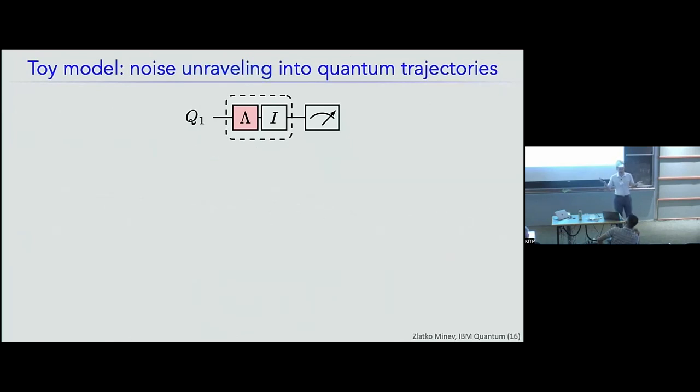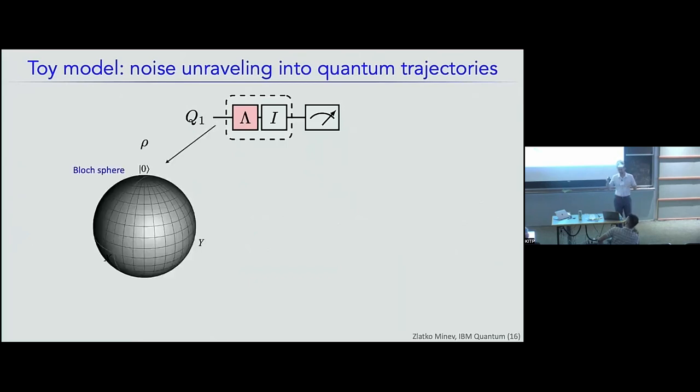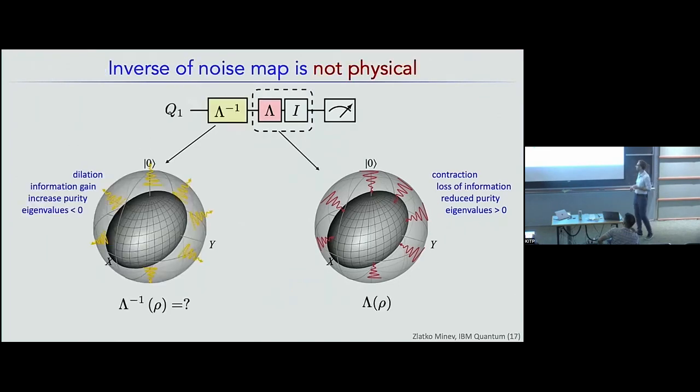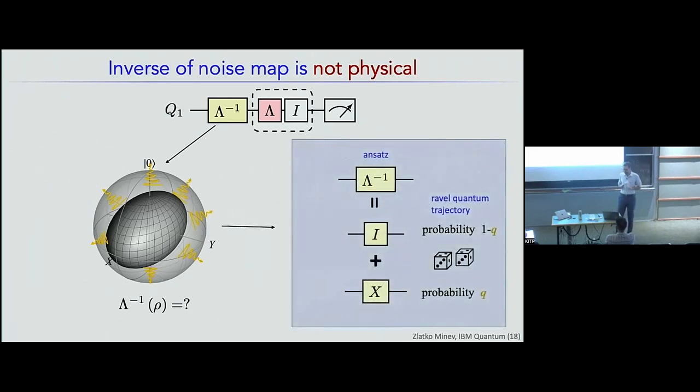The average evolution of these two quantum trajectories is then given by the average noise channel, lambda, which is a bit flip channel and looks like this. So visually, what does this actually do? And I mean, of course, the noise free states live on the qubit Bloch sphere and the very surface of it. And the noise itself, this channel lambda, then contracts all of the states towards the middle of it. And this contraction results in loss of information, it's reduced purity, and it corresponds to these positive eigenvalues. On the other hand, if we now want to implement the inverse noise map, we have to do the inverse, which is a dilation of the Bloch sphere, which also results in information gain, increased purity, and therefore has to have these negative eigenvalues.